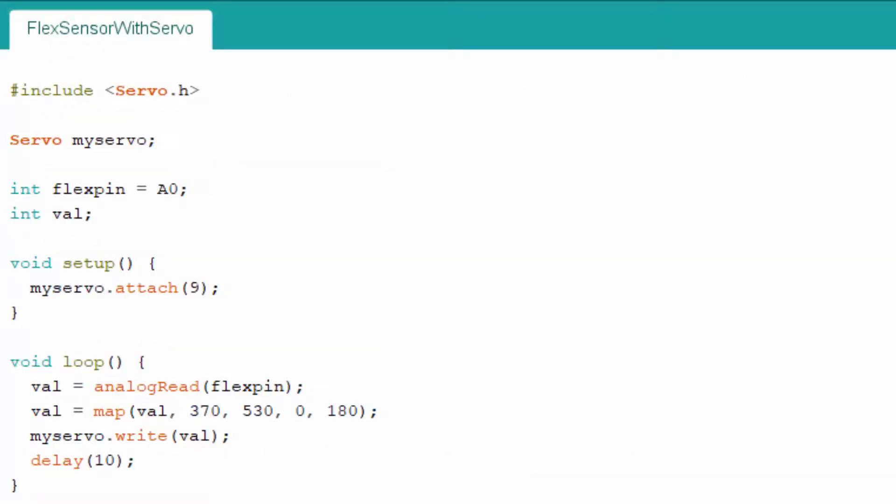Now let's come to the programming part. Hash include will include the servo library in our sketch. Create servo object to control a servo motor. Analog pin A0 is connected to flex sensor. Define variable for reading flex sensor value. We have attached our servo to pin number 9.